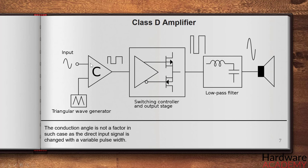The conduction angle is not a factor in such case as the direct input signal is changed with a variable pulse width. In this class D amplifier system, the linear gain is not accepted as they work just like a typical switch which have only two operations, on or off. Before processing the input signal, the analog signal is converted into a pulse stream by various modulation techniques and then it is applied to the amplifier system.